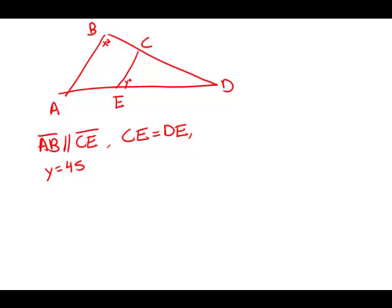We get a diagram that we're told is not drawn to scale, and then we're told if AB is parallel to CE, CE is equal length to DE, and Y is 45 degrees, then find X.